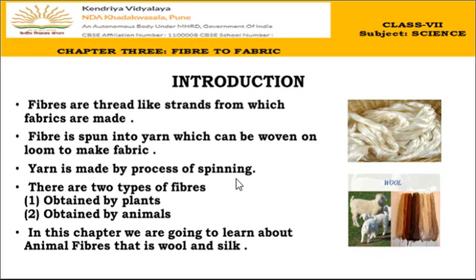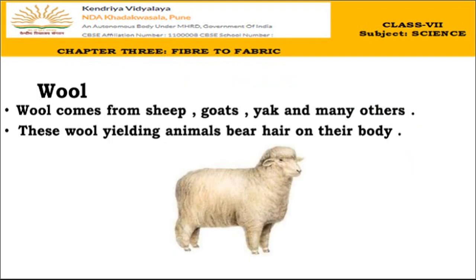Wool is obtained from sheep, yak, camels, and many other animals. Silk is obtained from silk moths. Wool is an animal fiber that comes from animals whose bodies are completely covered by hair. Those hairs are removed and processed — the fiber is then made into yarn, and from yarn the fabric is made.